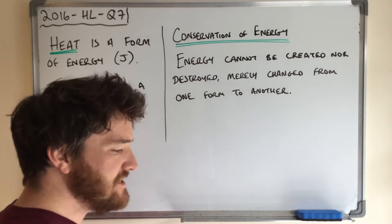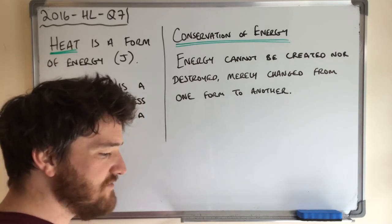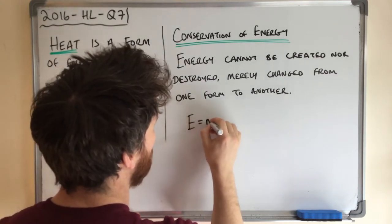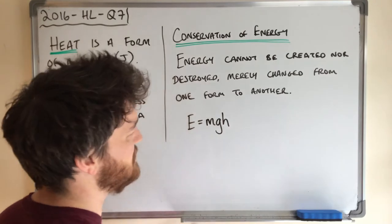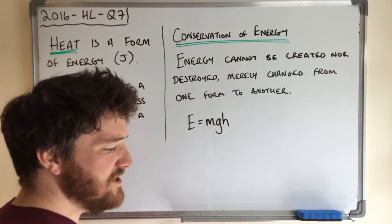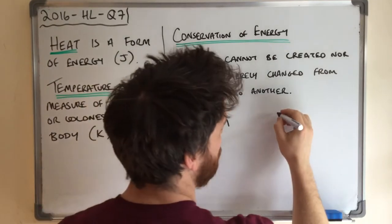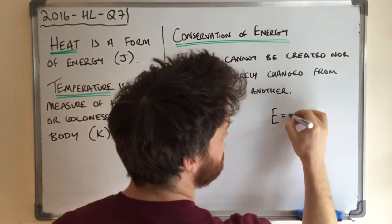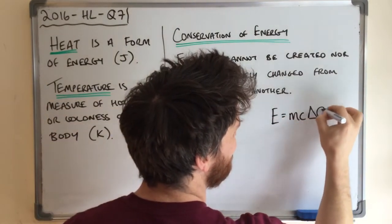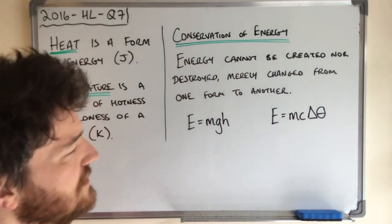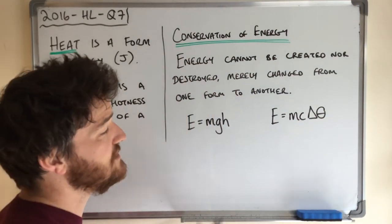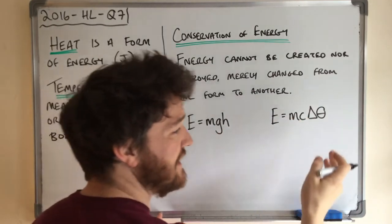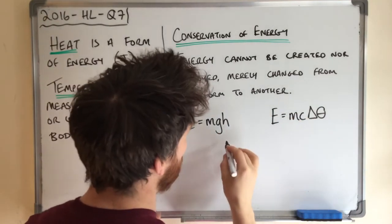They mention gravitational potential energy, so we use E = mgh, and this is being converted into heat energy, which for a temperature change is mc delta theta. Quite commonly you see mgh related to kinetic energy, but this time they've related them directly, which was a nice touch.